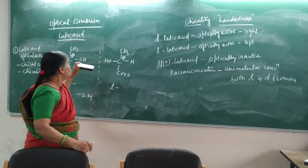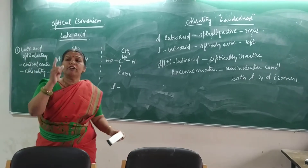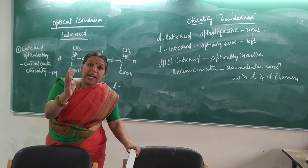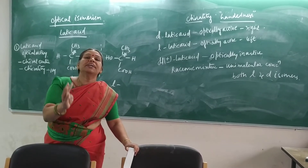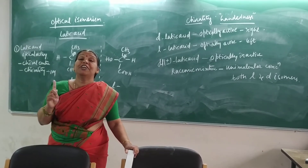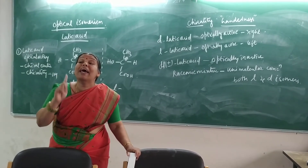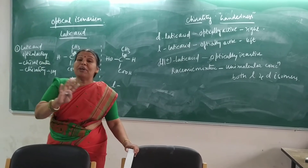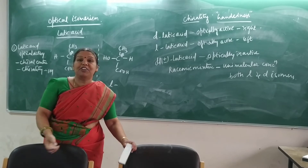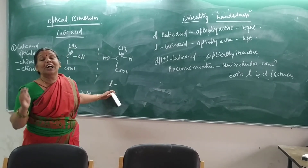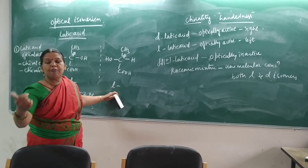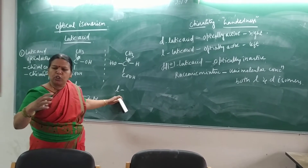All these optical isomers have the same molecular formula, same structural formula, same physical properties, and same chemical properties. The only difference is they have different biological properties. At that time they didn't know there could be an isomer with different biological activity. Therefore that led to that disaster. Now the D form is used because it is beneficial, whereas the L form is pathogenic and must be removed.